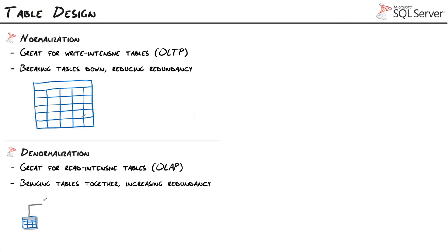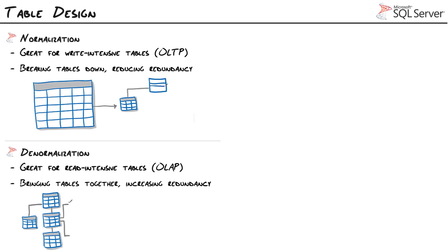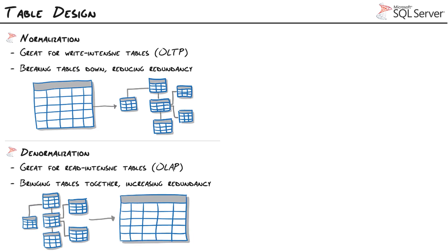So what's the first thing we do as designers and developers when we get our hands on a database — whether we're creating a new one or one fell on our lap? We're going to try to understand the schema, either how it was designed or how we're going to design it. At a high level it's really just going to be one of two things: it's either going to be a normalized database or a denormalized database, and you'll be able to tell that very quickly if you understand these design concepts.